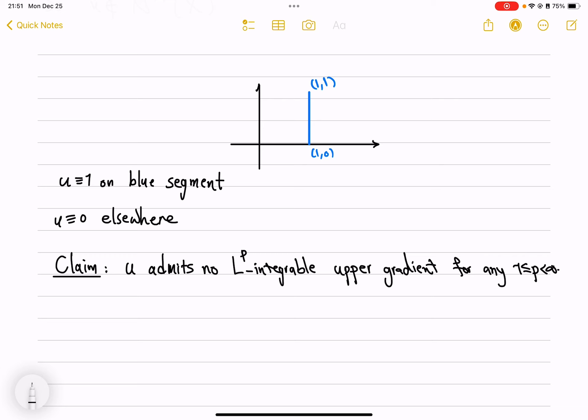I started by proving it for p between one and infinity with p equal one allowed, but later in my argument that I had prepared, I noticed that it only works for p strictly bigger than one. And right after that recording,